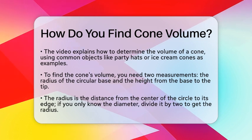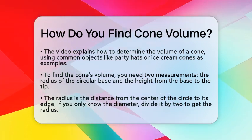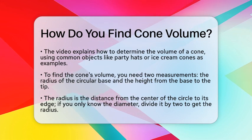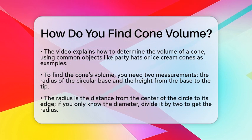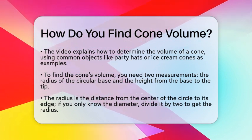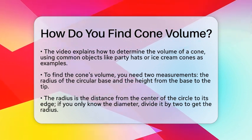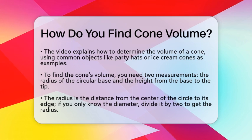To find the volume of a cone, you need to know two things: the radius of the circular base and the height from the base to the tip. The radius is the distance from the center of the circle to its edge. The height is the straight line from the base to the tip, perpendicular to the base.